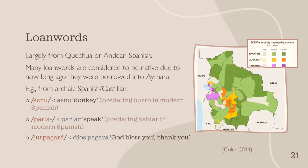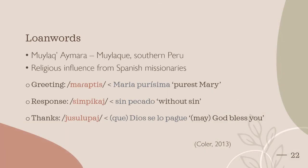The majority of loanwords in Aymara were borrowed from either Quechua or Andean Spanish. Words have been borrowed into Aymara for centuries, with most being borrowed so long ago that they are now considered native Aymara. Shown here are examples of loanwords that originally came from archaic Spanish or Castilian. They are so old that they predate language change and preserve variations of archaic forms of words such as the word for donkey. Many loanwords in Aymara come from local Andean Spanish, first introduced by Spanish missionaries who came to the Andes around the end of the 16th century, meaning many loanwords have roots in religion.